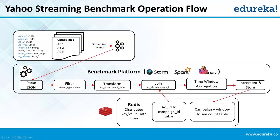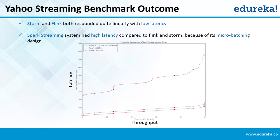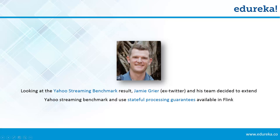All three real-time tools — Storm, Spark, and Flink — were tested on this workflow. The end result of Yahoo Benchmark was that Storm and Flink both gave low latency while Spark Streaming had high latency because of its micro-batching design. Jamie Grier was convinced that Flink was far and away the most advanced streaming processing system available in the open source world. However, he was not convinced with the result of Flink's throughput, so he and his team decided to extend the Yahoo Streaming Benchmark, believing Flink had more to offer.